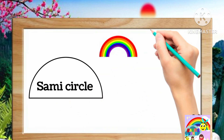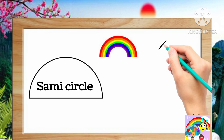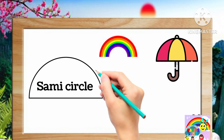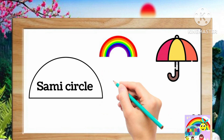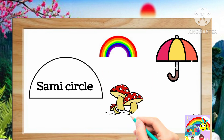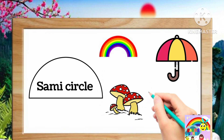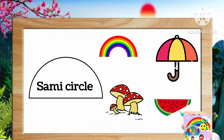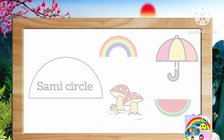Examples are rainbow, umbrella, mushrooms, sliced watermelon.